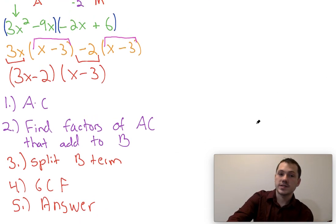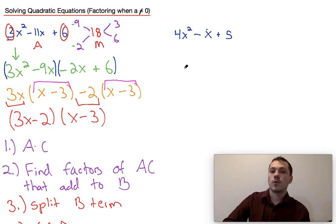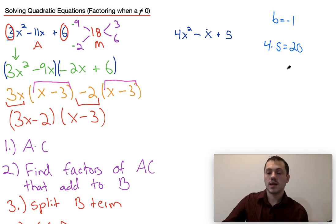So let's go ahead and follow those steps as we do this next problem right here. 4x squared minus x plus 5, a times c would be 4 times 5, which is 20. We then want to find the factors of a times c that add to b. In this case, our b value is negative 1.